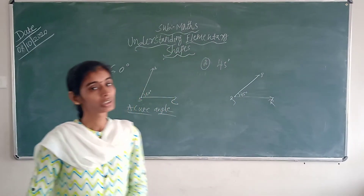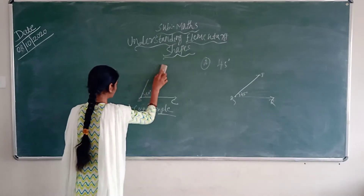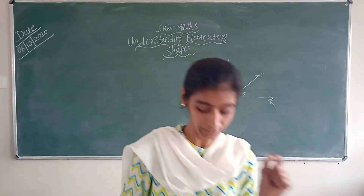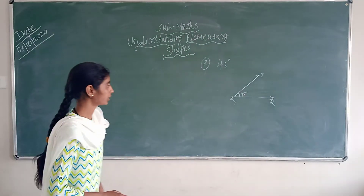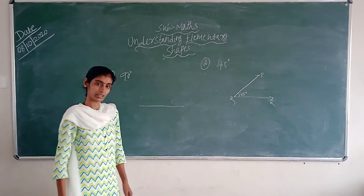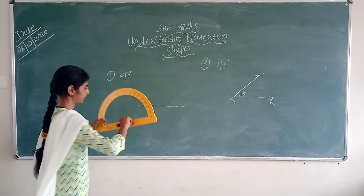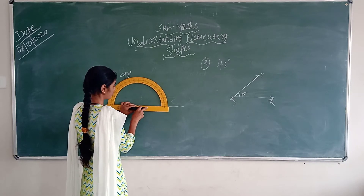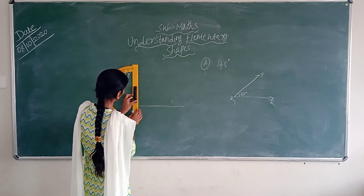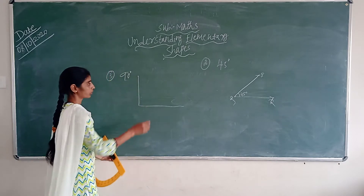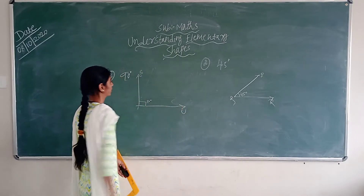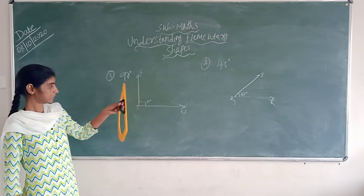Likewise, right angle. You all know it is very simple, children. Right angle — what is the measure of right angle? Yes, the measure of right angle is exactly 90 degrees. So to measure the 90 degrees: again you have to draw one line. Again children you have to place this protractor on the line segment like this. Then you can see 90. Then you have to join the line. So now you all can see that is the 90 degree angle. This is the 90 degree angle.